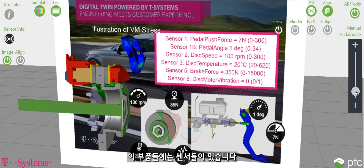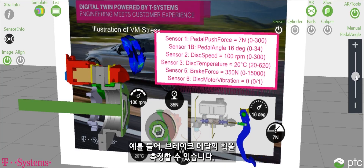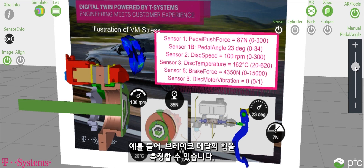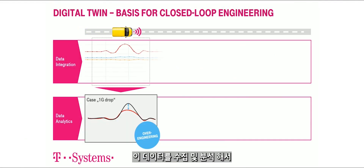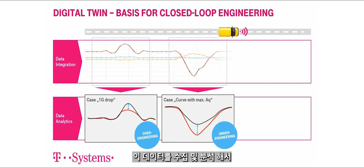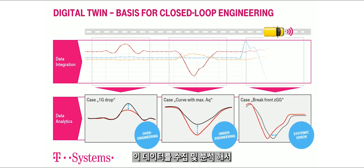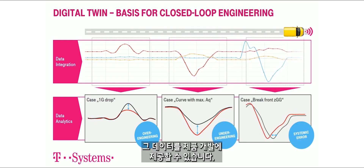We have sensors at these components so we can measure, for instance, the force on the brake pedal. The brake system is connected to the internet so we can collect and analyze this data and provide it to product development.